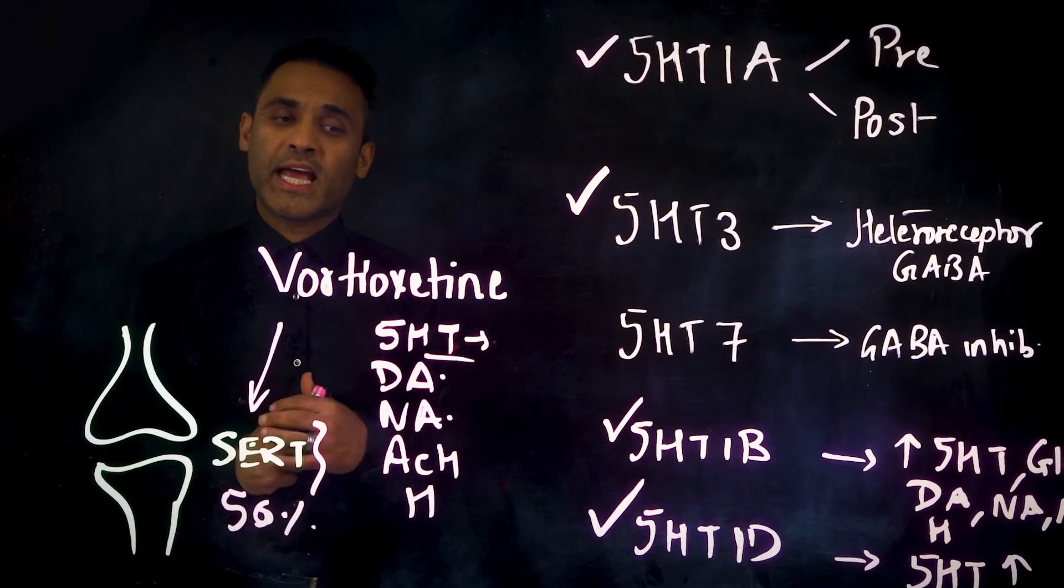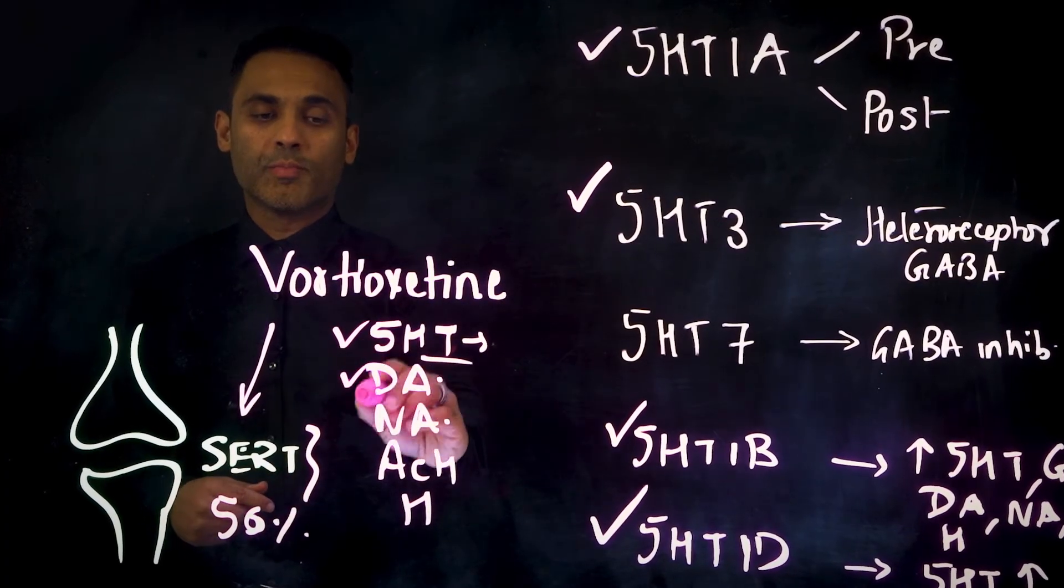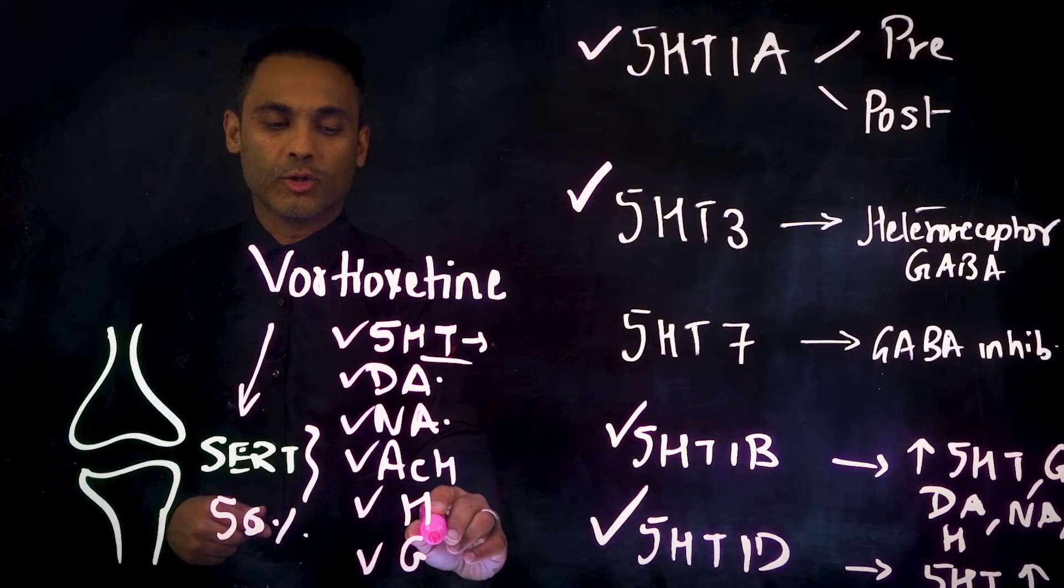Vortioxetine overall is an agent. We saw that it increases serotonin, dopamine, noradrenaline, acetylcholine, histamine, and glutamate.